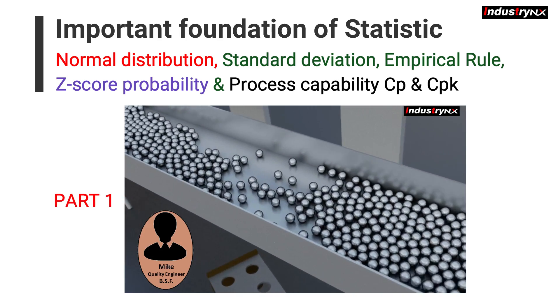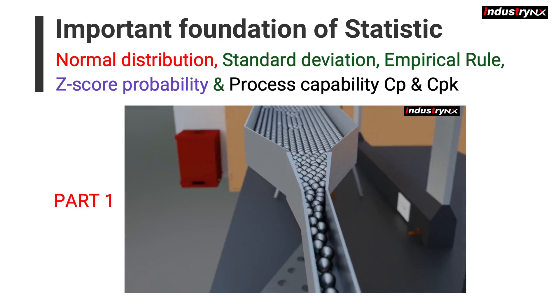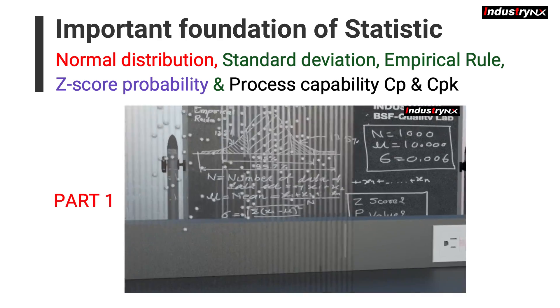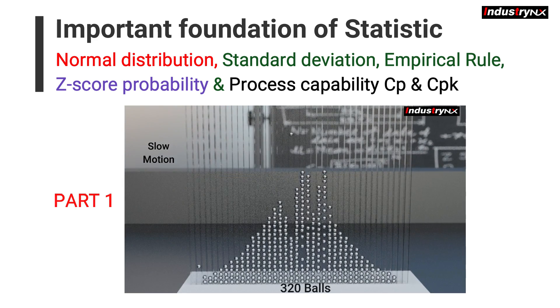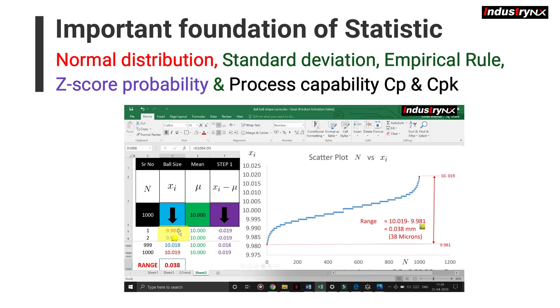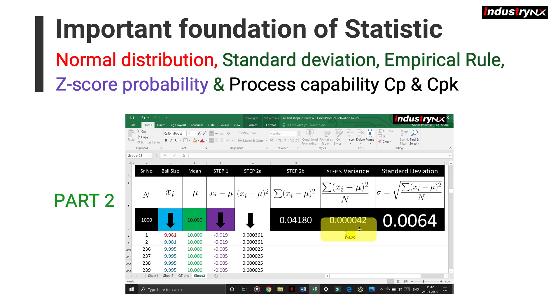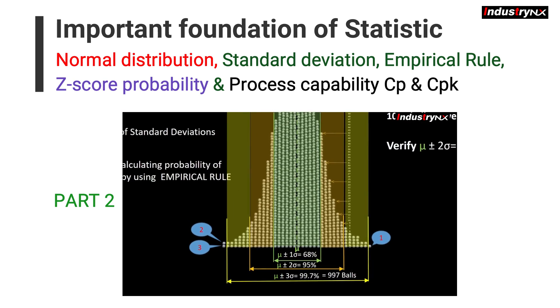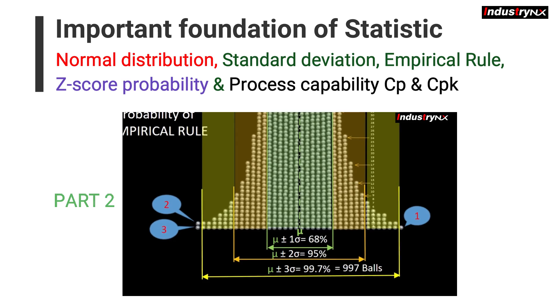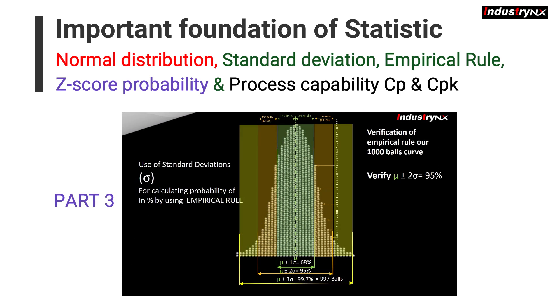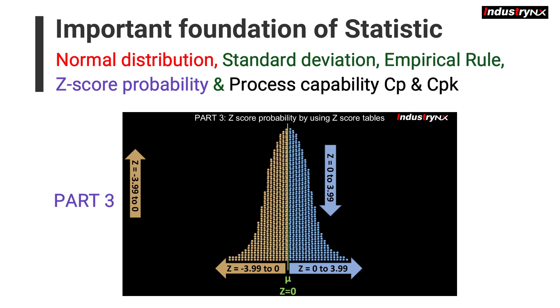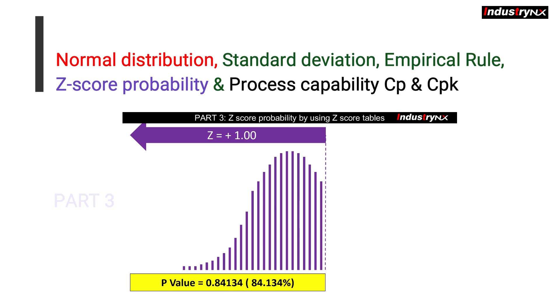In earlier videos we learned real-life normal distribution example through computerized simulation. We also learned variance, mean and standard deviation, and empirical rule 68, 95, 99.7 followed with z-score probability. Hope you are able to recall earlier parts before we proceed.